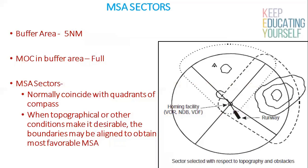The sector should normally coincide with the quadrants of the compass. However, when topographical or other conditions make it desirable, the boundaries of the sectors may be chosen to obtain the most favorable Minimum Sector Altitude.